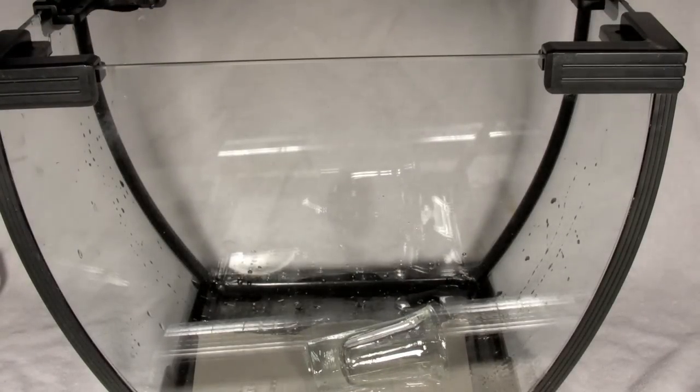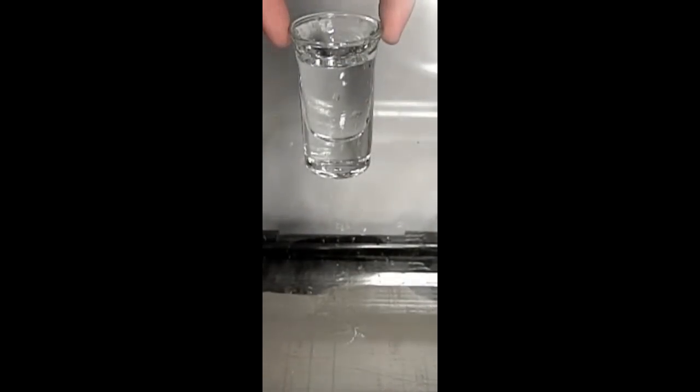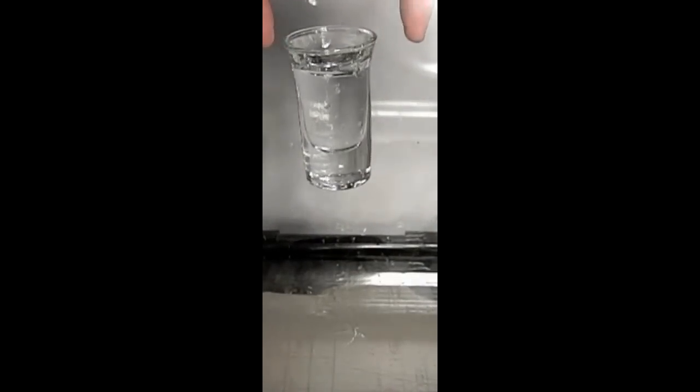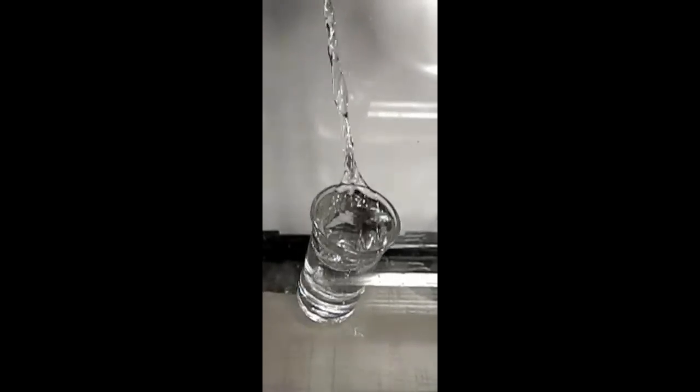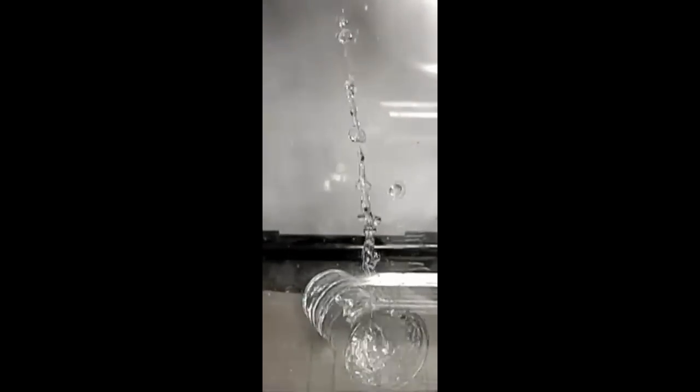You can see the water bounced higher than the height from which I dropped the shot glass. This is shot at 1200 frames per second and shows a jet of water that starts at the center of the shot glass after it bounces off the floor.